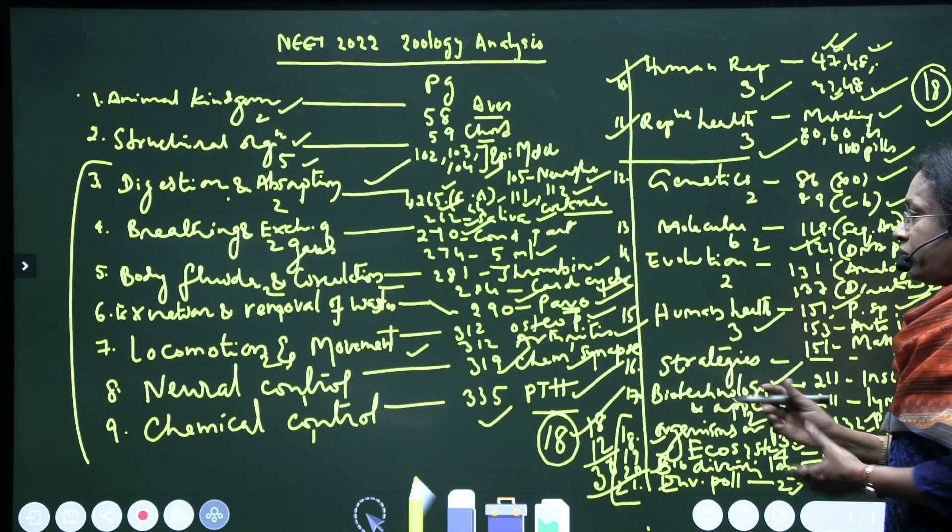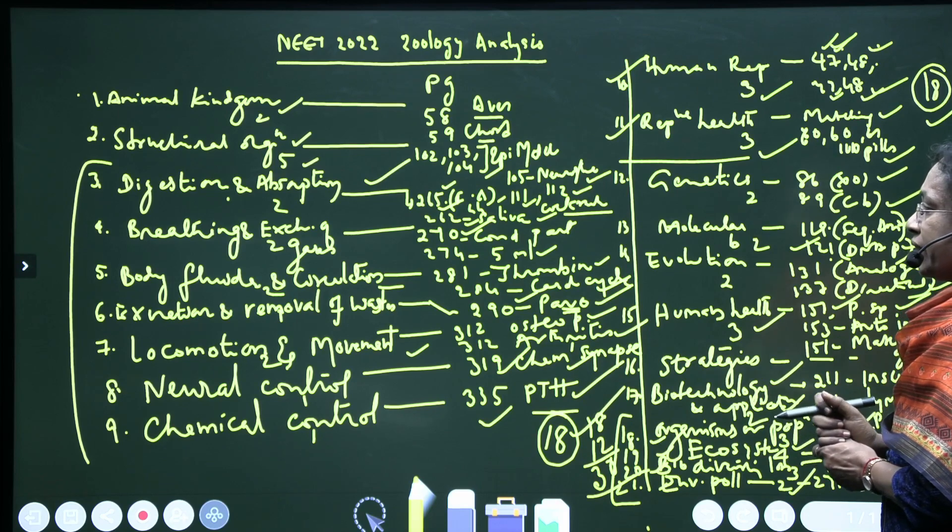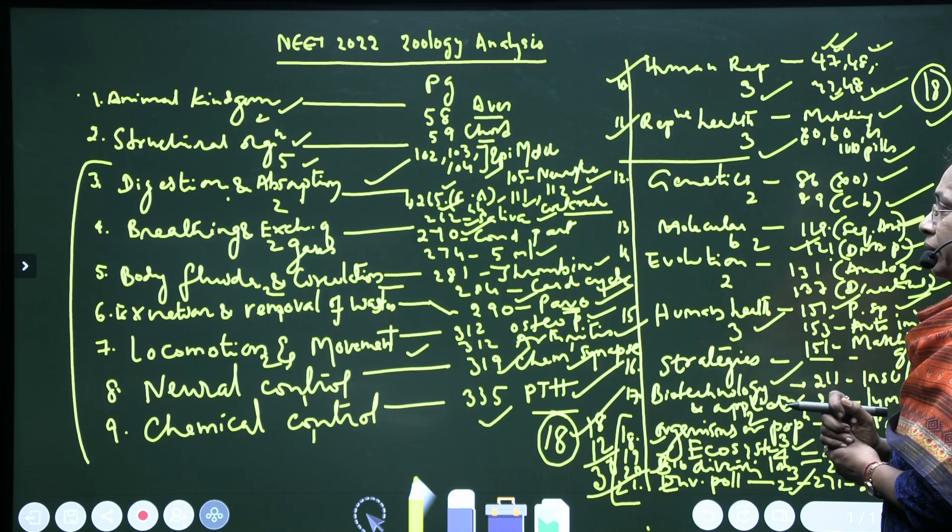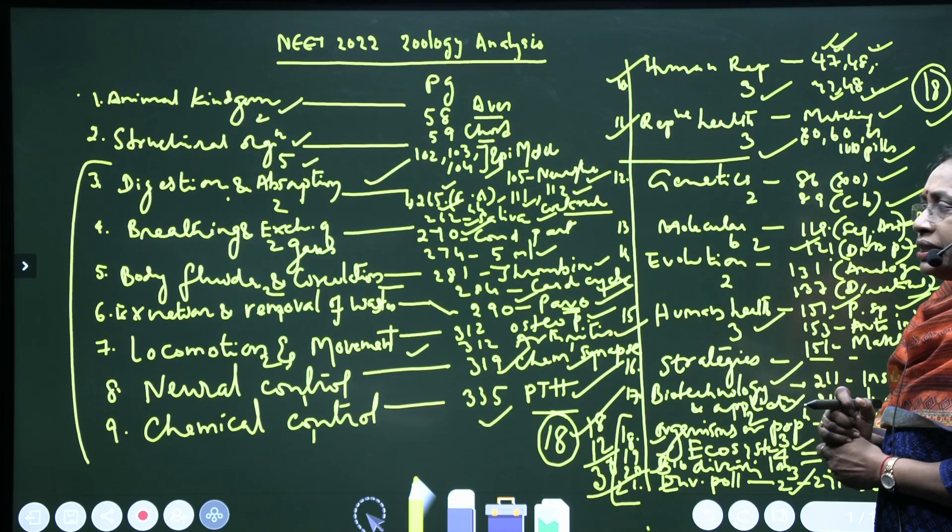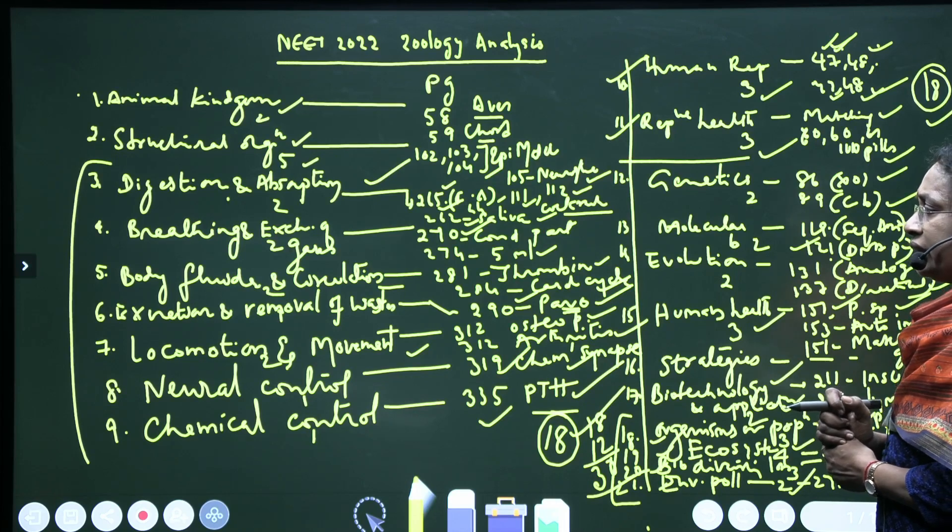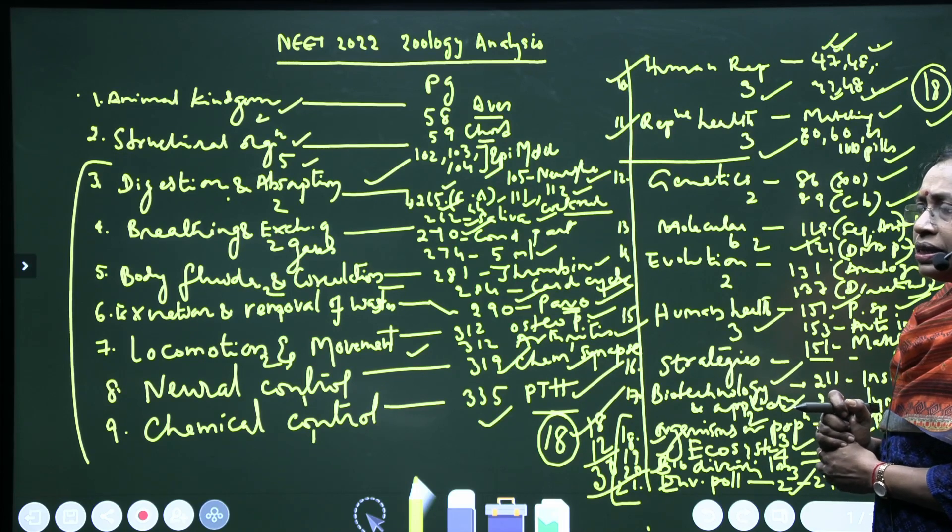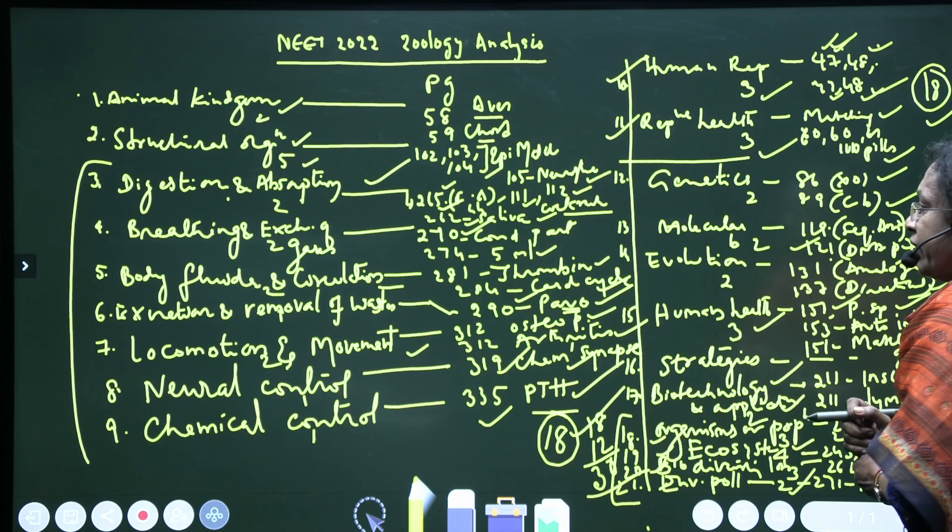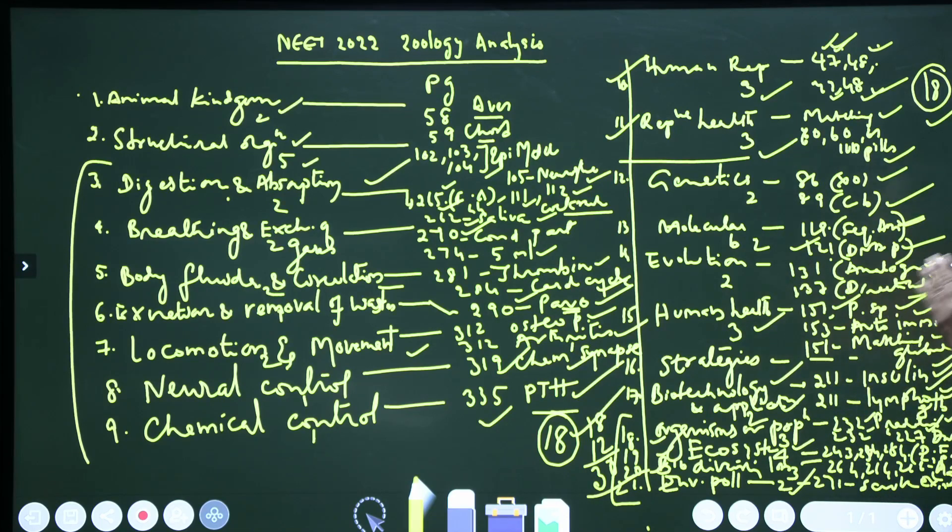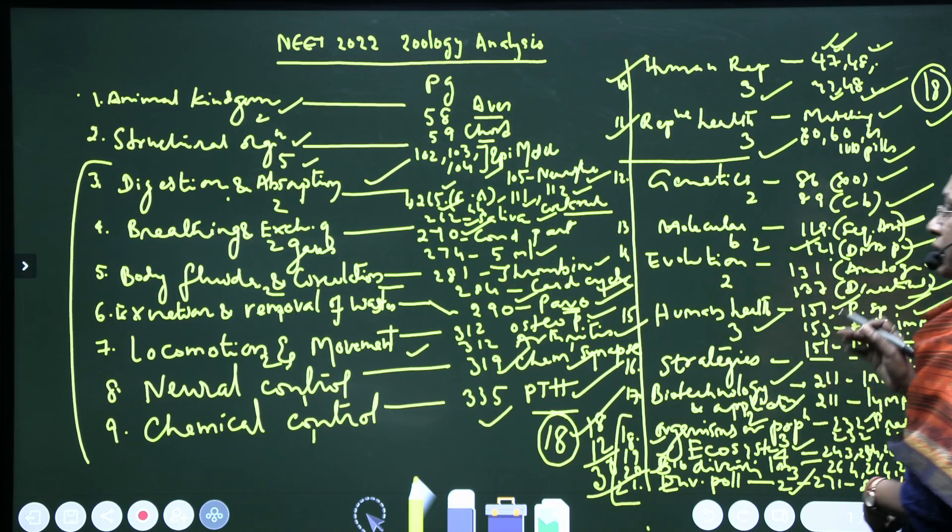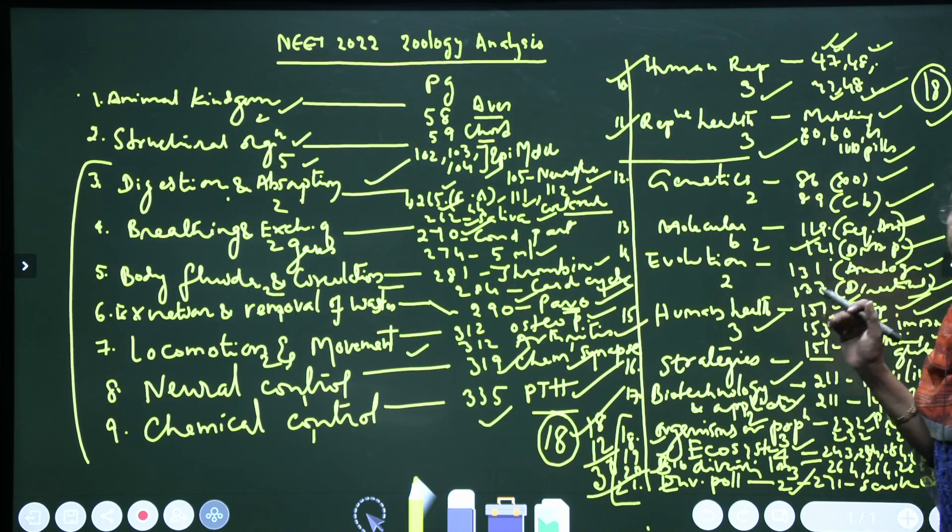And 12 questions from Ecology. See, children, this is very much important - to focus on NCERT. Don't go here and there for extra materials and extra stuff and all. Be concentrated, be focused on NCERT in order to get 180 by 180 in the NEET. Okay, all the best. Thank you.